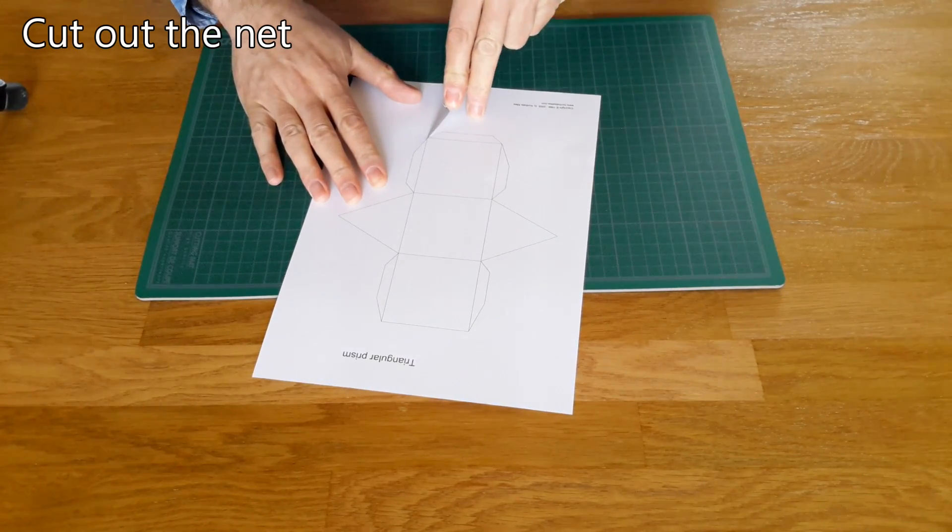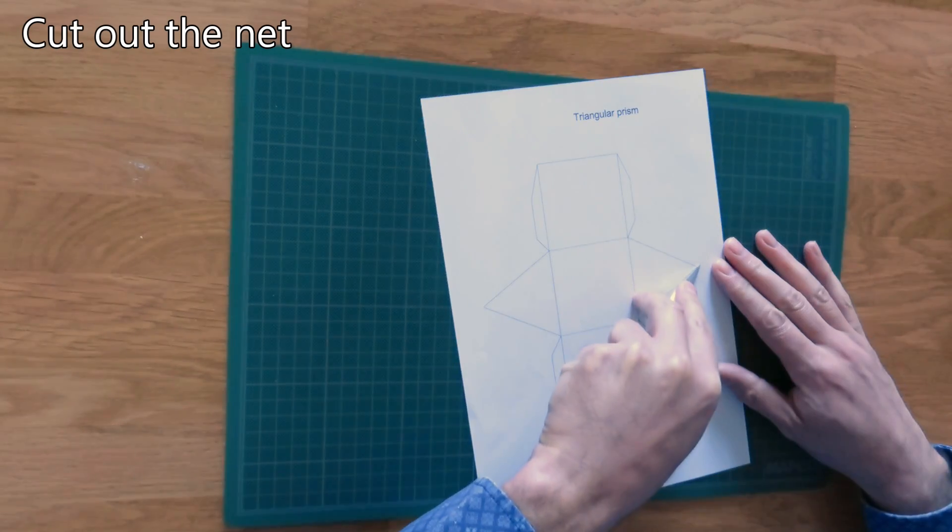Cut out the prism net. I do all cutting with a knife. You can also cut out with scissors.